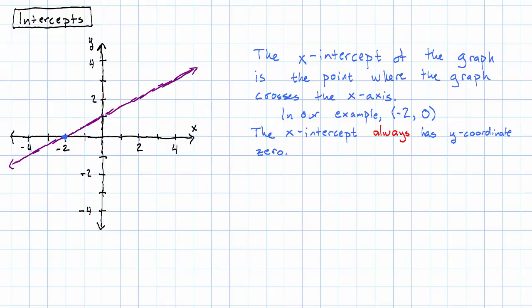Why is that always the case? Well, it's because the x-axis is all of the points with y-coordinate 0. So if the graph is touching the x-axis, that must mean that the y-coordinate is 0.